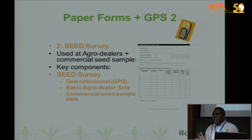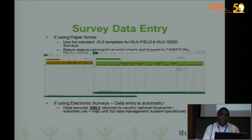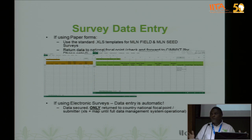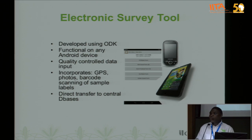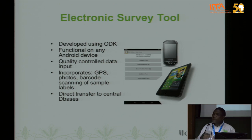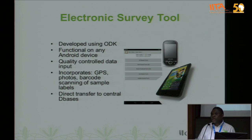We have different parameters we want to capture during the survey process. This is a typical type of form you can develop having all the information you want to capture. The difference between the manual form and the electronic approach is that you come up with a clear electronic survey form and then upload it into the ODK tool.